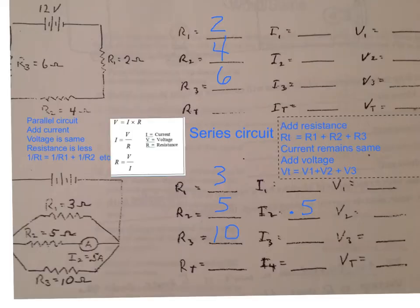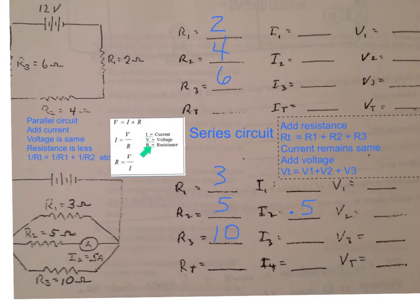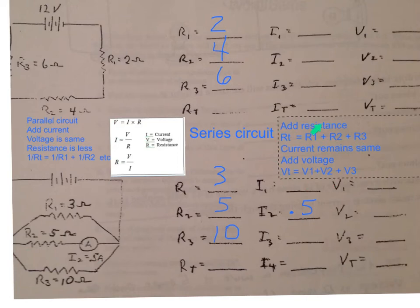We will be looking at Ohm's law as it relates to circuits. The top circuit diagram is a series circuit, and the bottom diagram is a parallel circuit. I have placed Ohm's law in its various forms alongside notes about each circuit type. In a series circuit, we add the resistances to get total resistance; current remains the same; and we add the voltages to get total voltage.